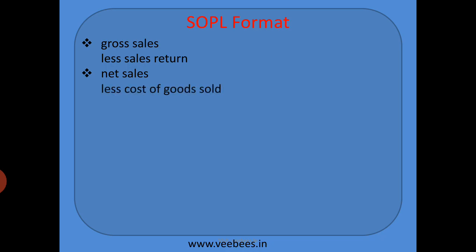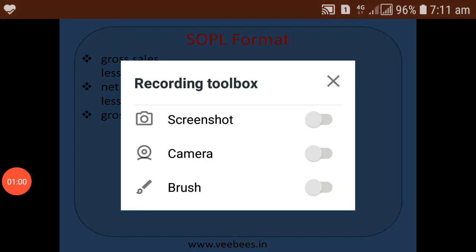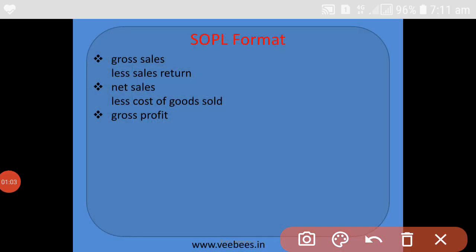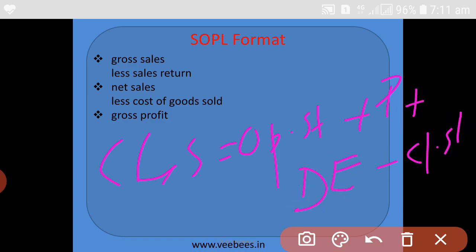From net sales, we will deduct the cost of goods sold. You should know the equation to calculate cost of goods sold. Cost of goods sold can be calculated using the equation: opening stock plus purchases plus direct expenses minus closing stock.